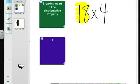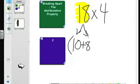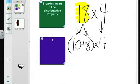So what we've been studying is that we can take 18 and we can break it apart into two easy numbers like 10 and 8 because 10 plus 8 is 18. But we still have to multiply each of those by 4.